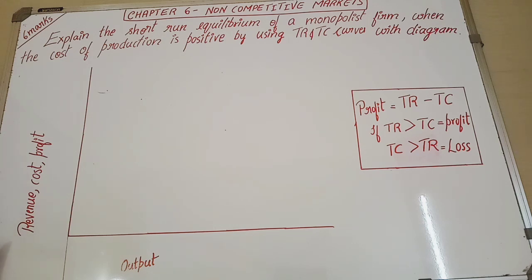So what is the question? Question is: explain the short run equilibrium of a monopolist firm when the cost of production is positive by using TR and TC curves with a diagram. Very easy concept. The only hurdle here is to draw the graph. So that is why I am drawing the graph in the video itself. Kindly have a notebook, your scale and pencil and draw along with the video.